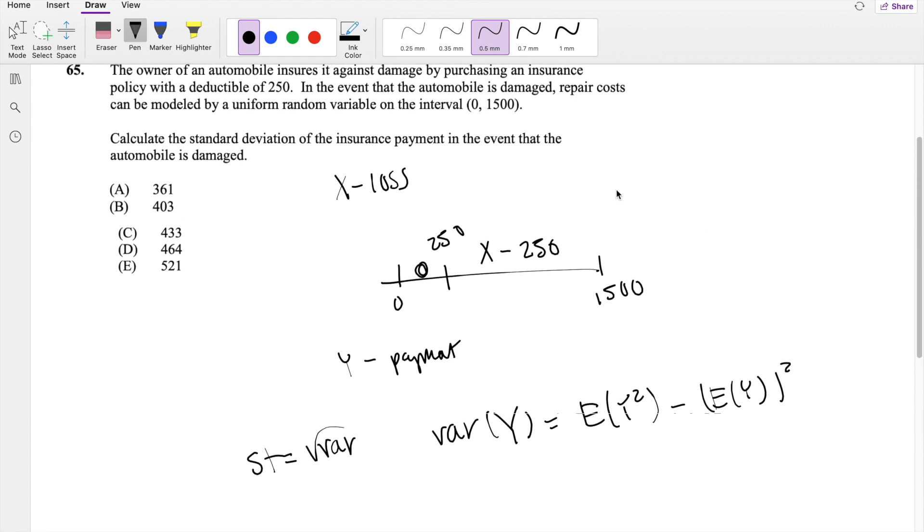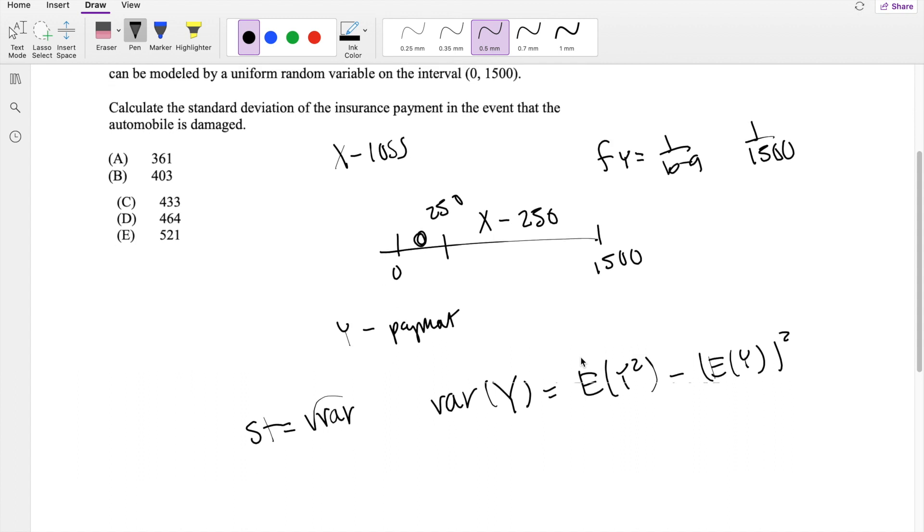We do know that probability distribution function for Y is equal to 1 over B minus A, where B is the upper limit of this, so that's going to be 1 over 1,500.